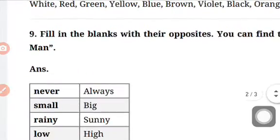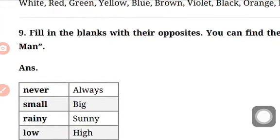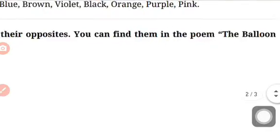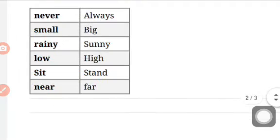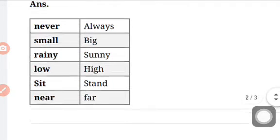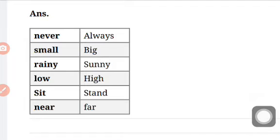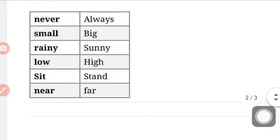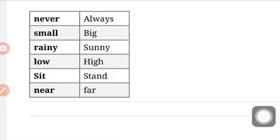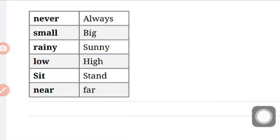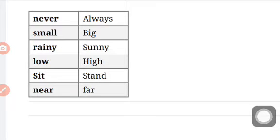Then number nine is, fill in the blanks with their opposites. You can find them in the poem, The Balloon Man. So our first word is never. N-E-V-E-R, never. Its opposite word is always. A-L-W-A-Y-S, always. Then small, you know. Its opposite word is big. B-I-G, big. Then rainy. R-A-I-N-Y, rainy. So its opposite word is sunny. S-U-N-N-Y. Then low. L-O-W, low.